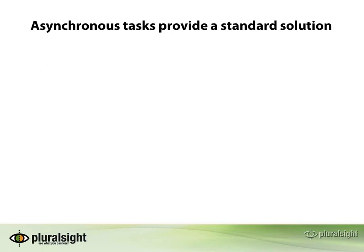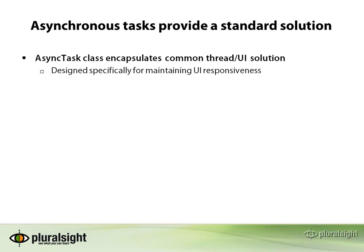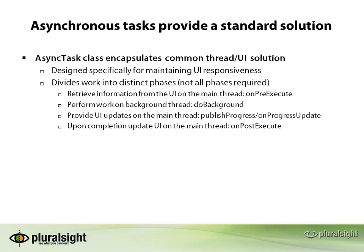And that's where asynchronous tasks come in. Asynchronous tasks provide a standard solution to the kind of problem we were dealing with — running something in the background that needs to periodically interact with the user interface. Asynchronous tasks are implemented using a class called AsyncTask, which provides a standard set of behaviors. Its real purpose in life is maintaining user interface responsiveness. We're going to derive a new class from AsyncTask and implement specific steps in the processing, dividing the work into distinct phases — basically just overridable methods in the class.